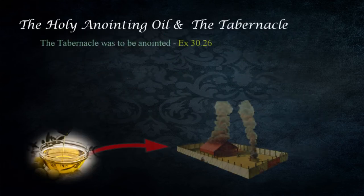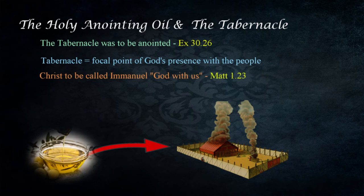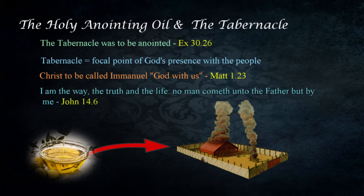The tabernacle itself was to be anointed with the holy anointing oil in Exodus 30:26. The tabernacle was the focal point of God's presence with the people and represented his guidance and authority. Christ was to be called Emmanuel, meaning "God with us," in Matthew 1:23, representing the fact that the Messiah had come to call mankind back to God. Christ is the only path to the Father — "I am the way, the truth, and the life. No man cometh unto the Father but by me." — John 14:6. This was represented by the physical tabernacle under the Mosaic law, foreshadowing a time when the spiritual tabernacle of God would be available to all who seek the Lord.